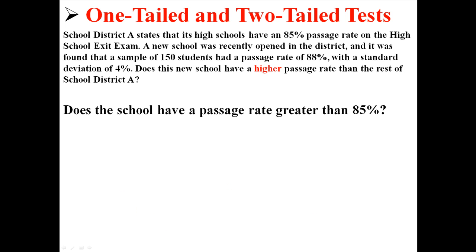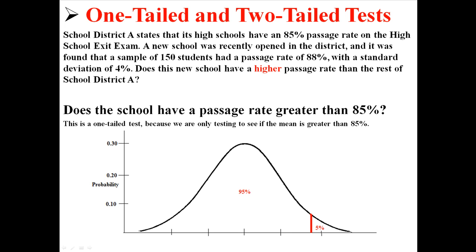If the question was: does the school have a passage rate that is greater than 85%? This would be a one-tailed test because we're only testing to see if the mean is greater than 85%. It would look something like this, with our 0.05 alpha at the top because we're testing to see if it's greater than 85%.